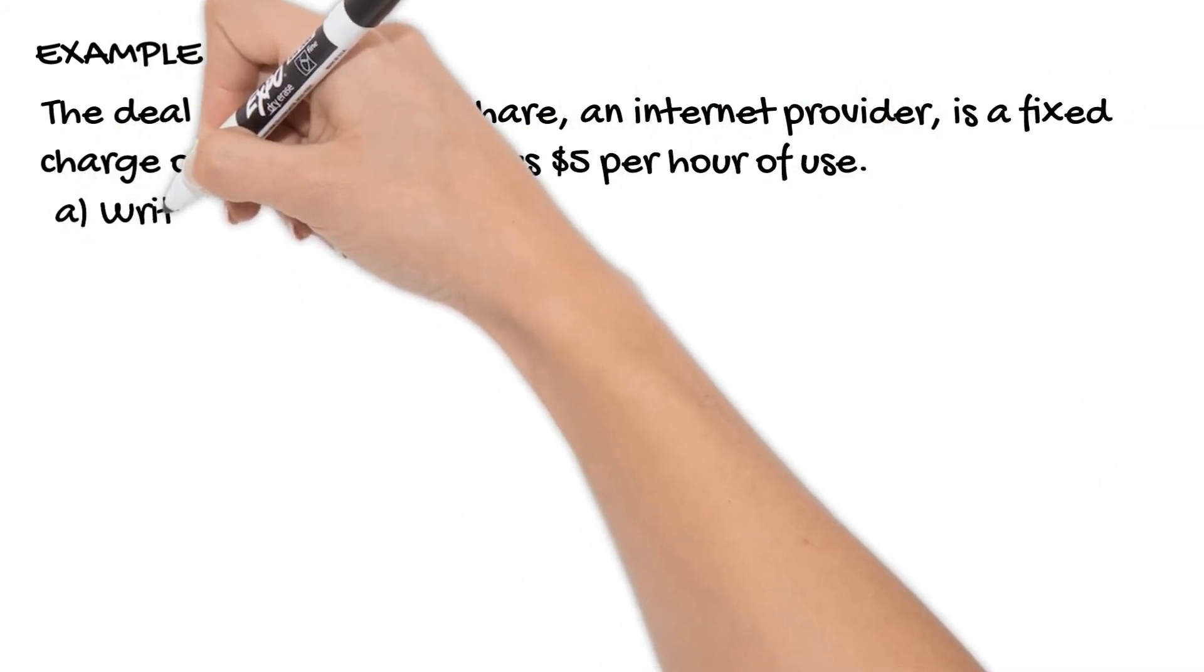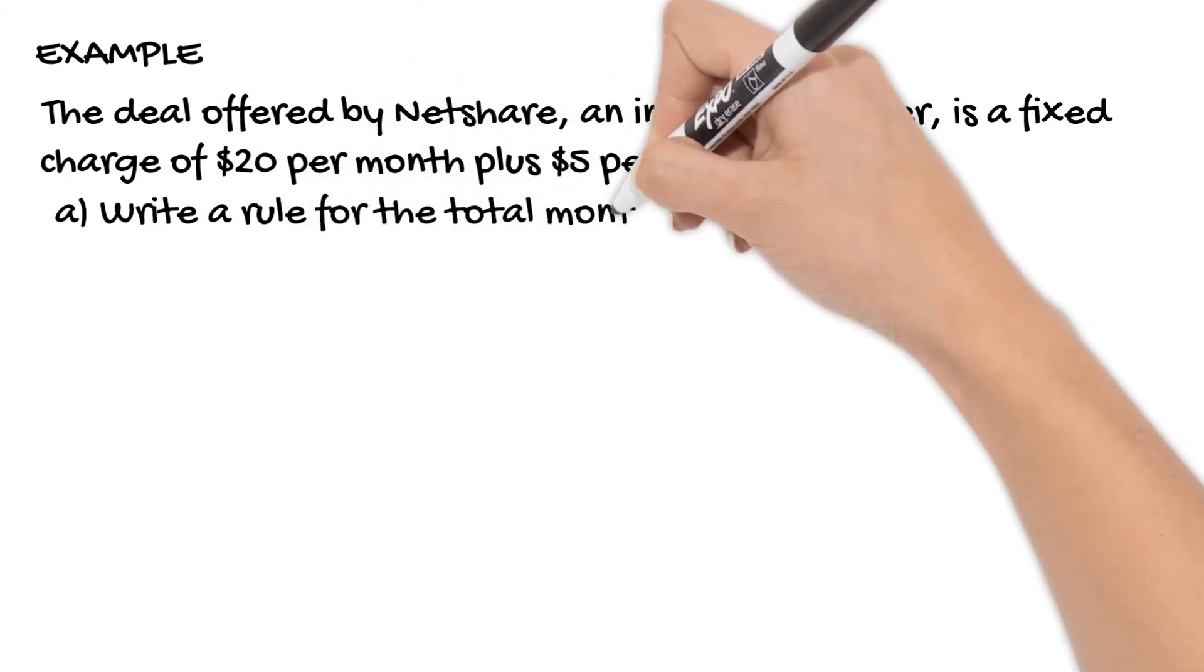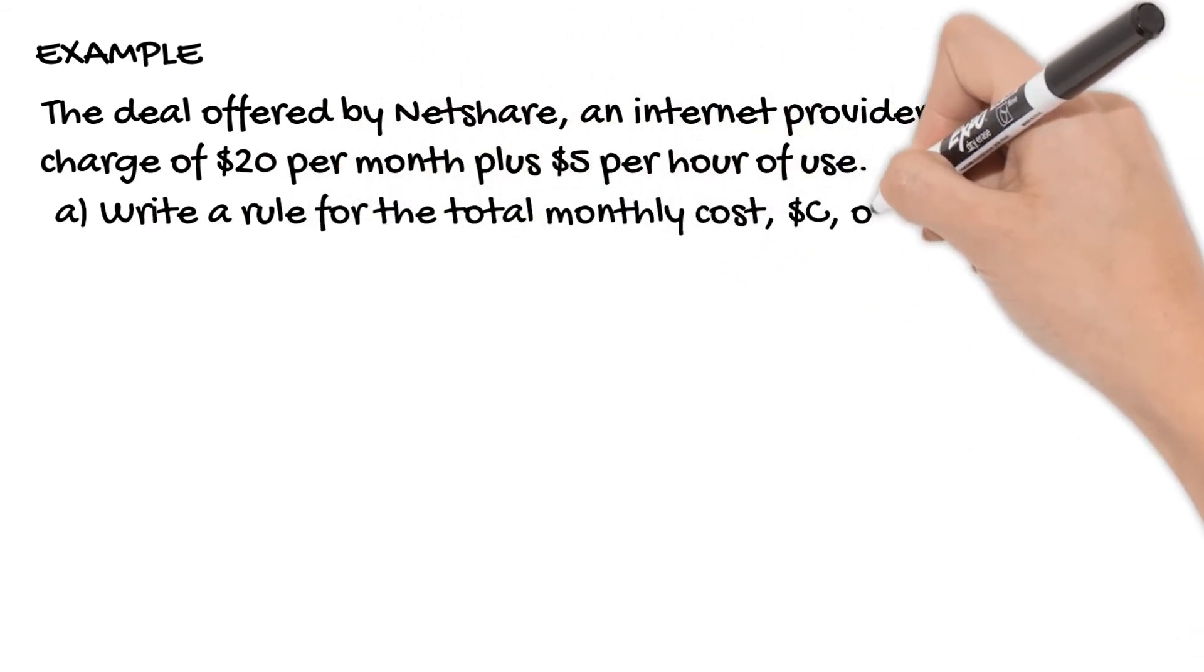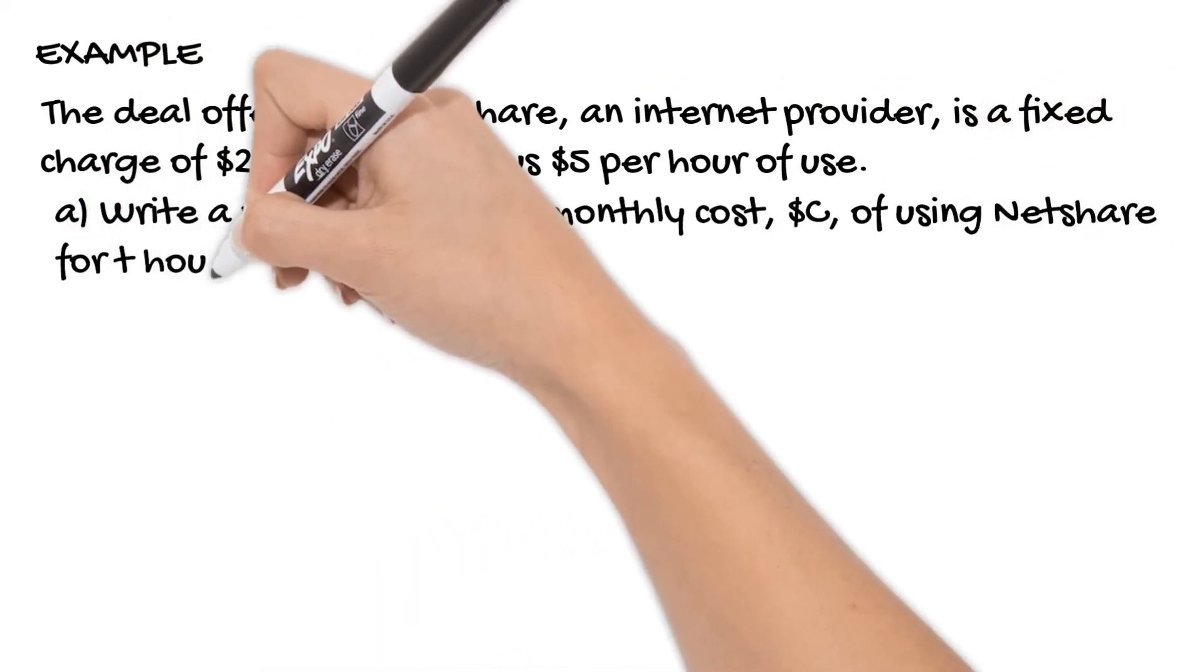We want to write a rule for the total monthly cost, being C, of using NetShare for T hours per month. Quite often you use T for time, C for cost, etc.